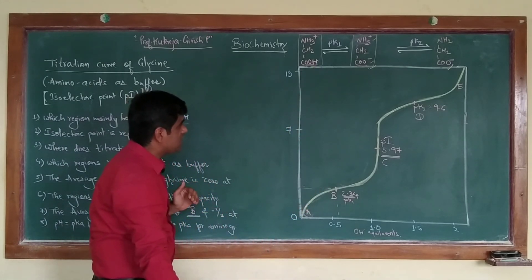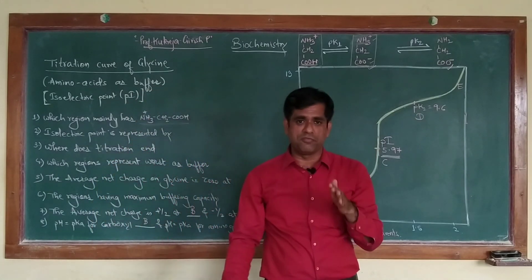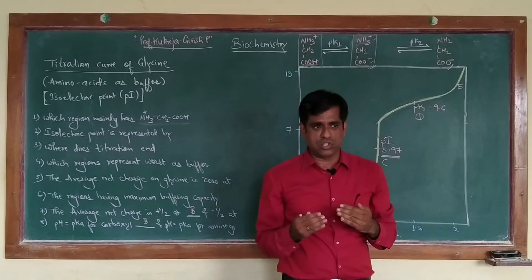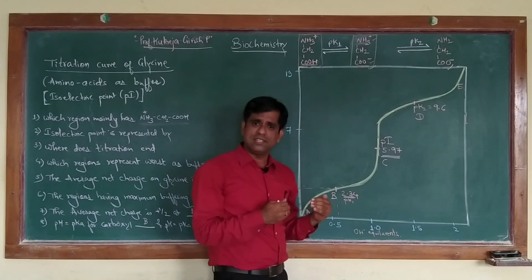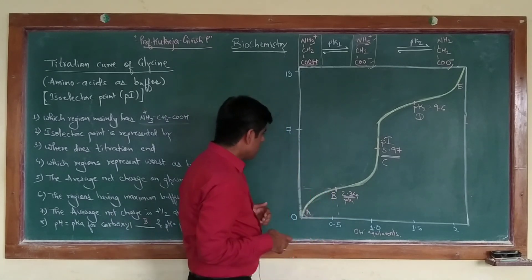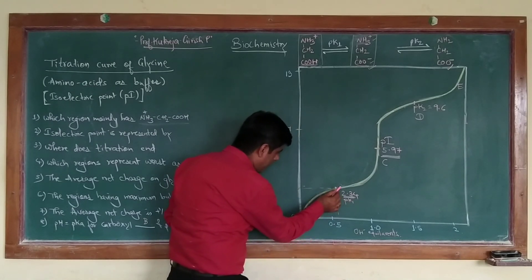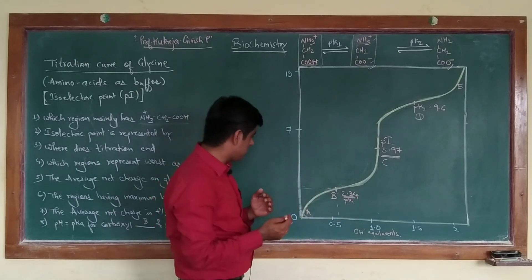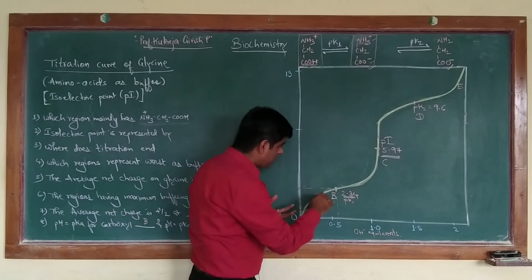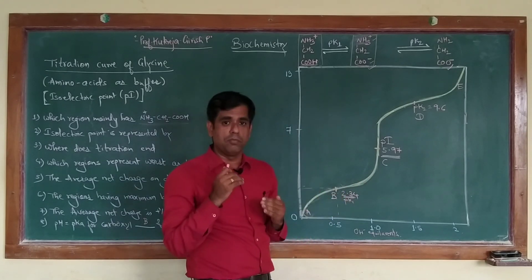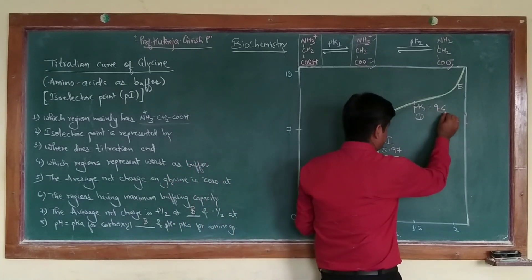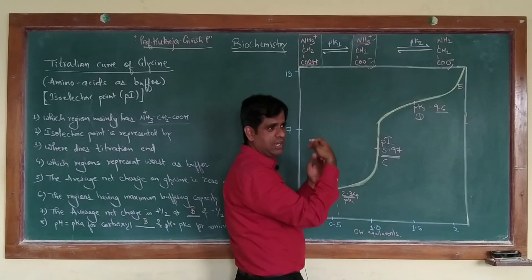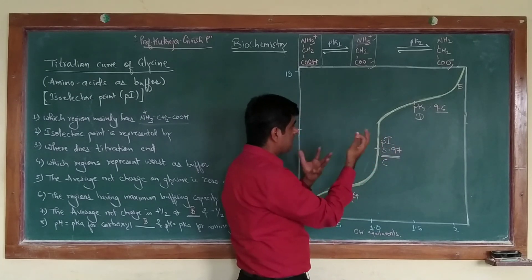There are different regions where amino acids can act as buffers. A buffer is defined as a solution which resists the change in pH — it has a reserve acidity and a reserve basicity. This amino acid can act as a buffer one pH unit below and above 2.34, so for example between pH 1.3 and 3.3. Similarly, it can act as a good buffer one pH unit above and below 9.6, so between pH 8.6 and 10.6.